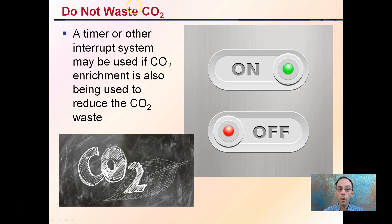Lastly, if you are using CO2, you don't want to waste your CO2 by exhausting it out of the facility. A timer or other interrupt system may be used if CO2 enrichment is being implemented, also being used to reduce CO2 waste. You don't want to have your CO2 running at the same time you're exhausting your fan. Especially if you've oversized your fan, you could be taking in and exhausting out this carbon dioxide and essentially wasting what you're putting the time and energy into enriching your grow space with.